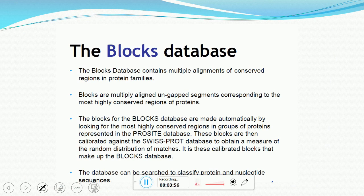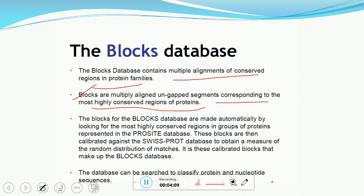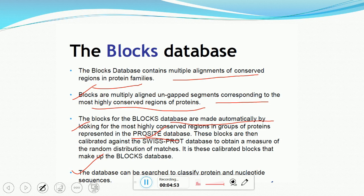The block database contains multiple alignments of conserved regions in protein families. Blocks are multiple aligned, un-gapped segments corresponding to the most highly conserved regions of proteins. The blocks for the database were made automatically by looking for the most highly conserved regions in groups of proteins represented in the ProSite database. These blocks are then calibrated against the SwissProt database to obtain a measure of random distribution of matches. It is these calibrated blocks that make up the blocks database, which can be searched to classify protein and nucleotide sequences.